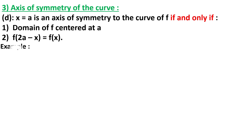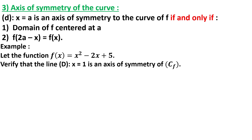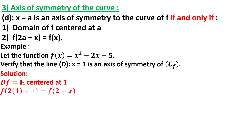For example, consider f(x) = x² − 2x + 5. We need to verify that the line x = 1 (so a = 1) is an axis of symmetry of the curve of f. We need to prove that the domain of f is centered at 1 — and recall that ℝ is centered at any number — then prove that f(2·1 − x) = f(2 − x) = f(x).